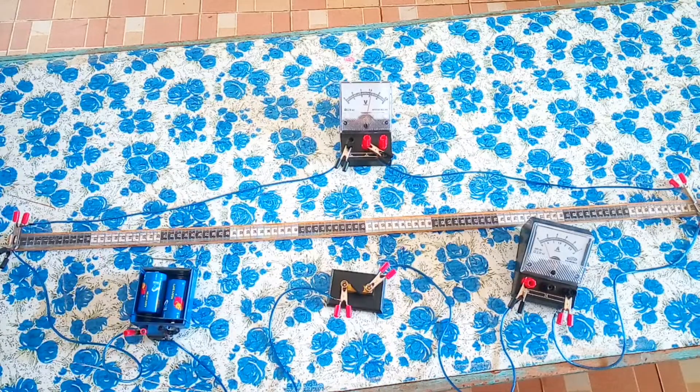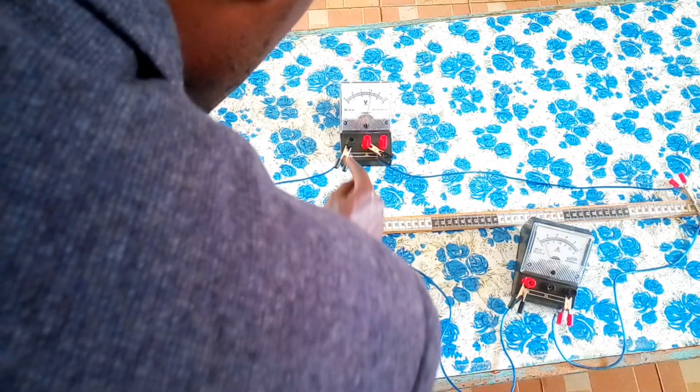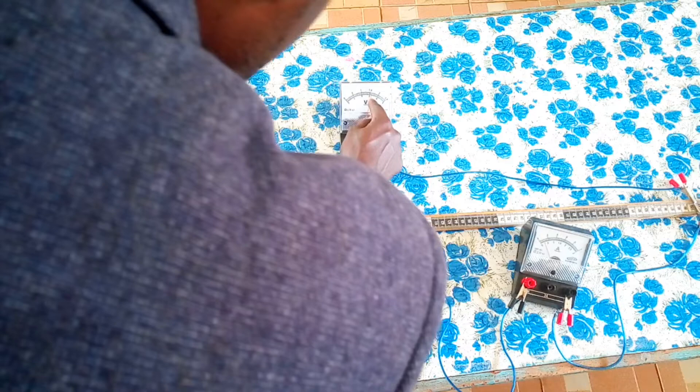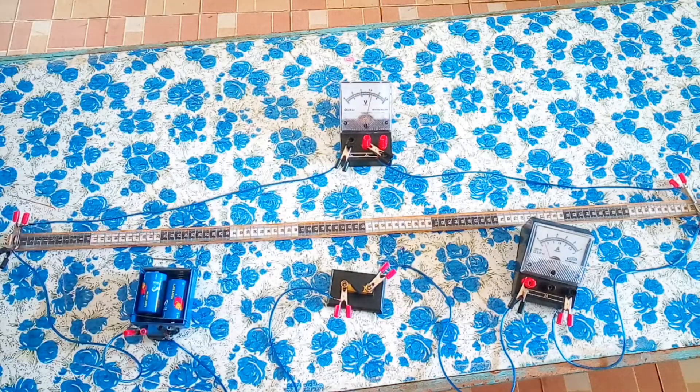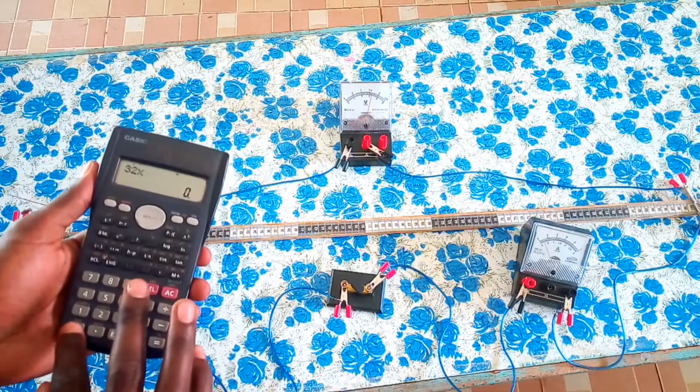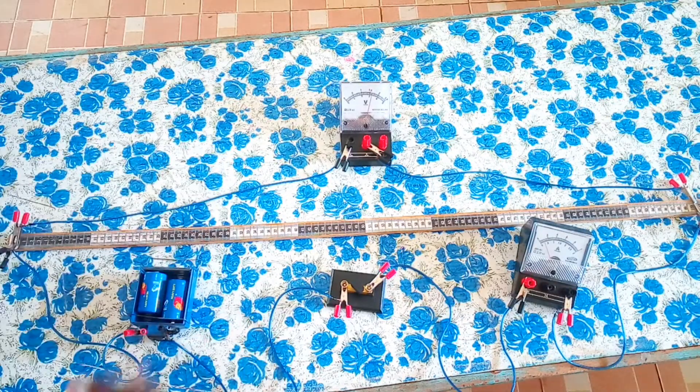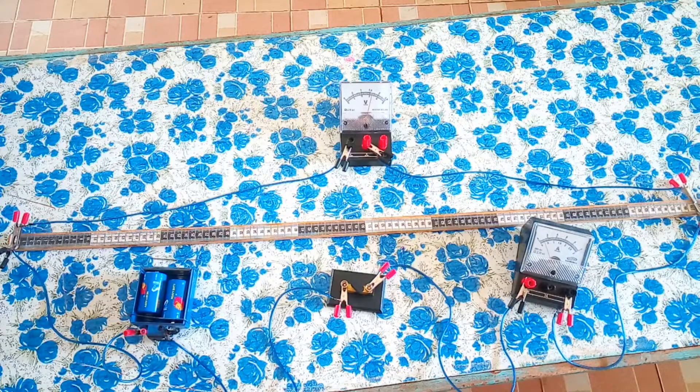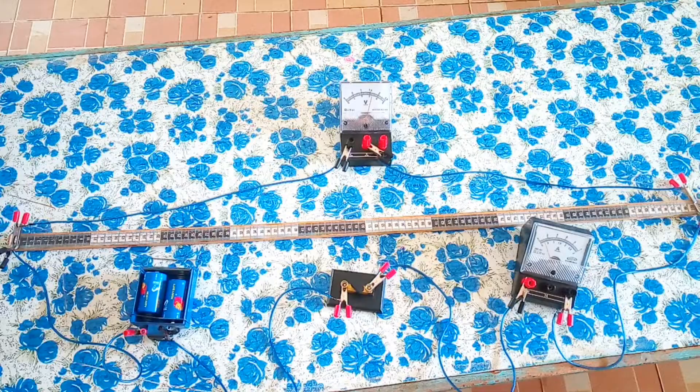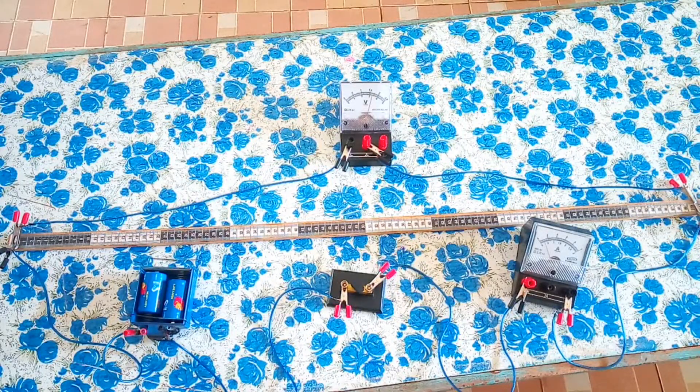Let's close the switch and record the voltmeter and ammeter readings. We have closed the switch. For the voltmeter we are using the upper scale, so these are 10, 20, 30, 32 divisions. So 32 times 0.05, that is 1.6 volts.